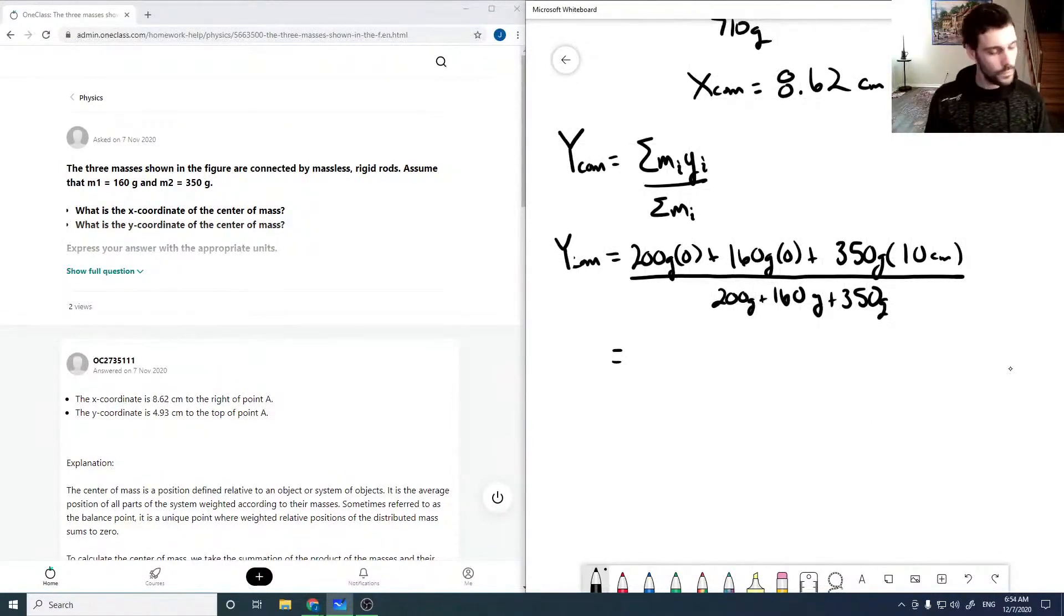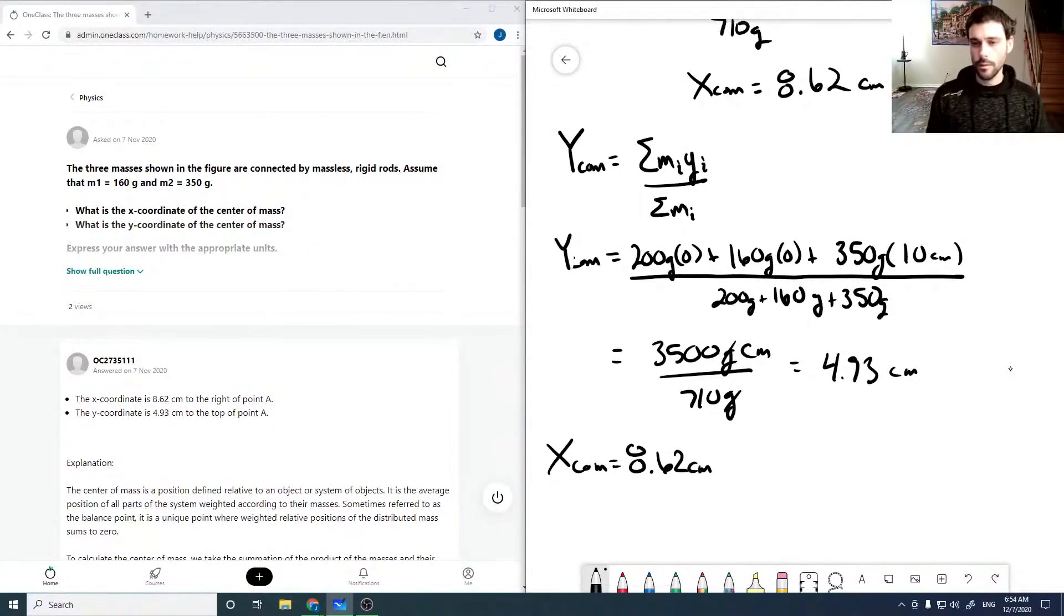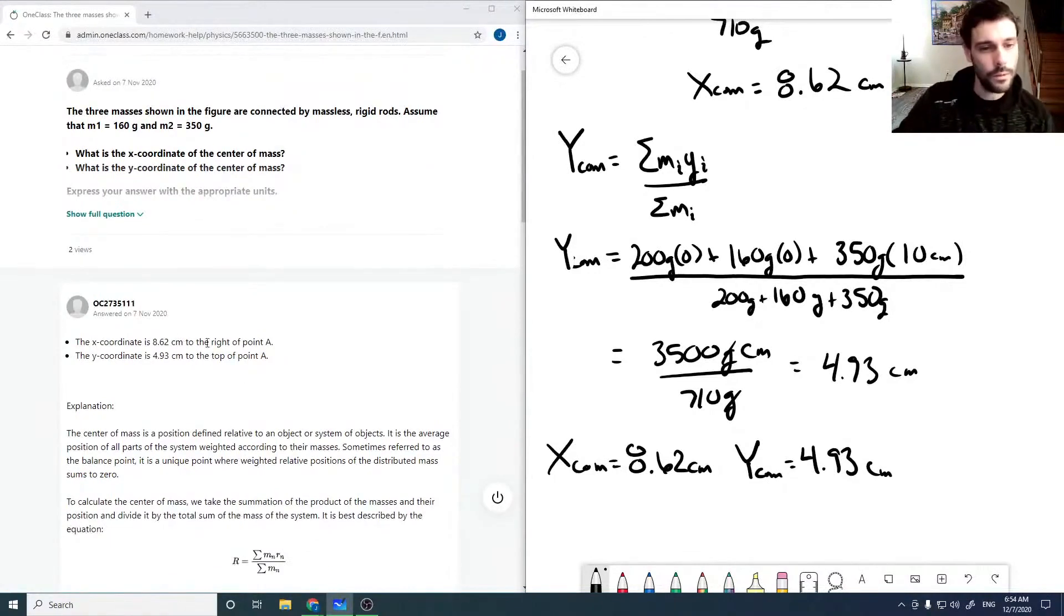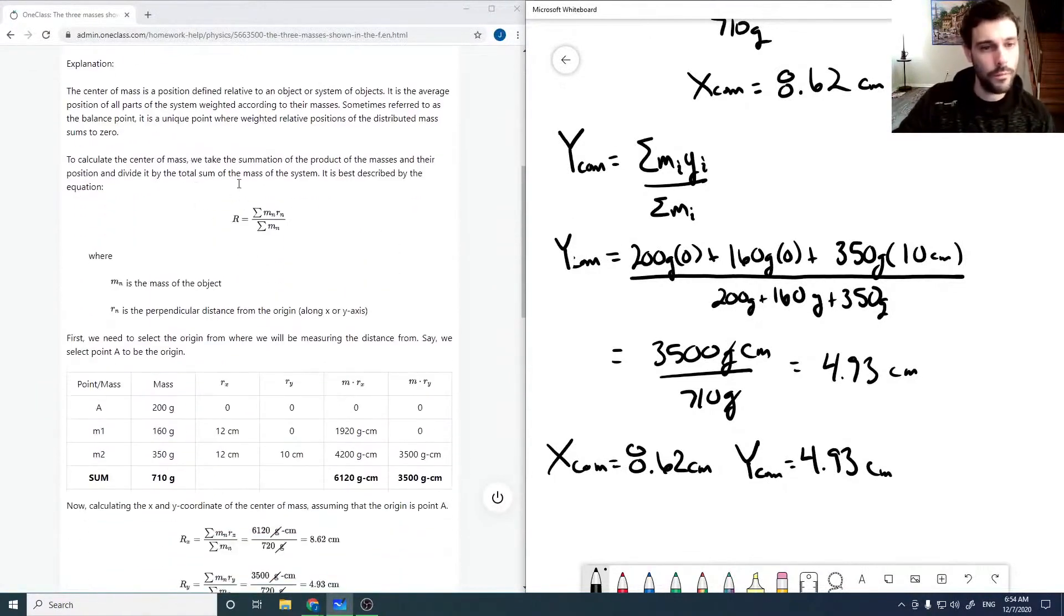And so then this is equal to 3500 gram centimeters over 710 grams. These grams will cancel, giving us 4.93 centimeters. And so our x center of mass is 8.62 and our y center of mass is 4.93 centimeters.